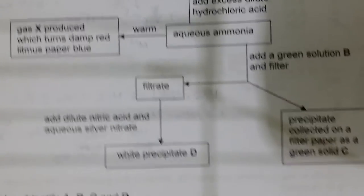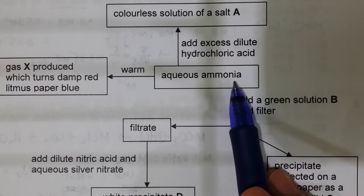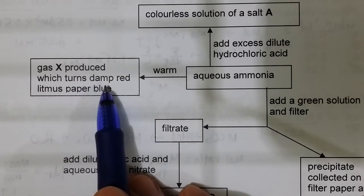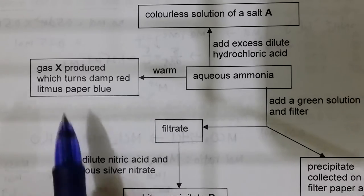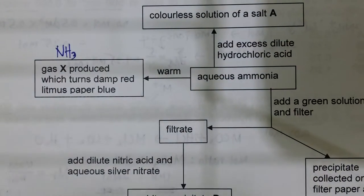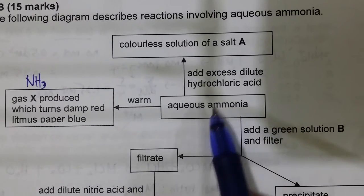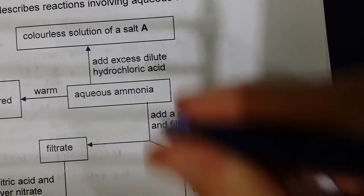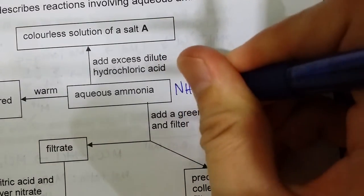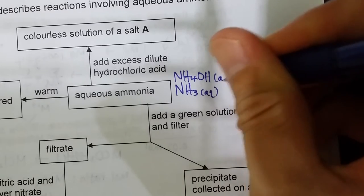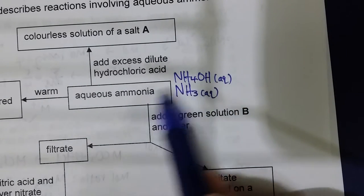For question six, aqueous ammonia is warmed to produce gas X, which turns moist red litmus paper blue. This gas must be ammonia, NH₃. Aqueous ammonia (NH₃(aq)) is the same as NH₄OH — all three representations are equivalent.